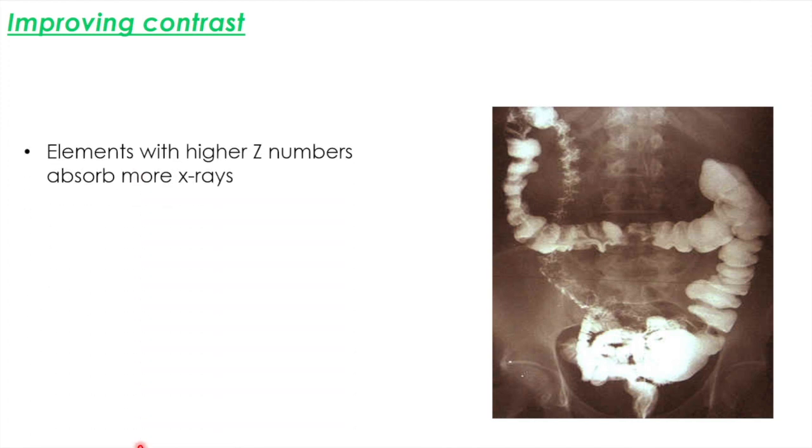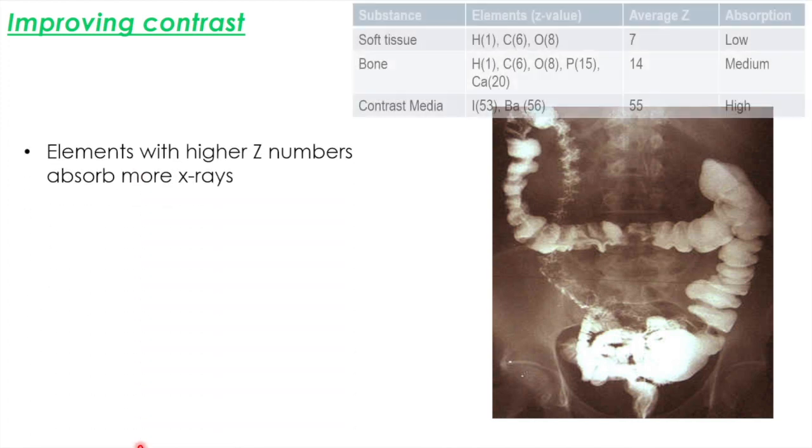So one of the things we start to notice is that elements with higher z-numbers tend to absorb more x-rays. So if we look at soft tissue, it's generally made up of hydrogen, carbon, and oxygen with an average z-number of 7. And that doesn't absorb x-rays particularly well. They tend to pass through it.